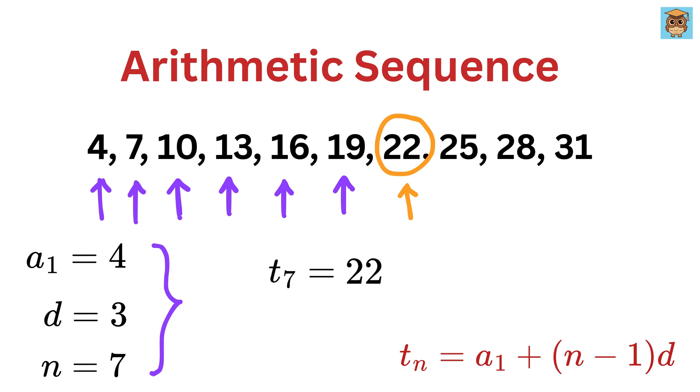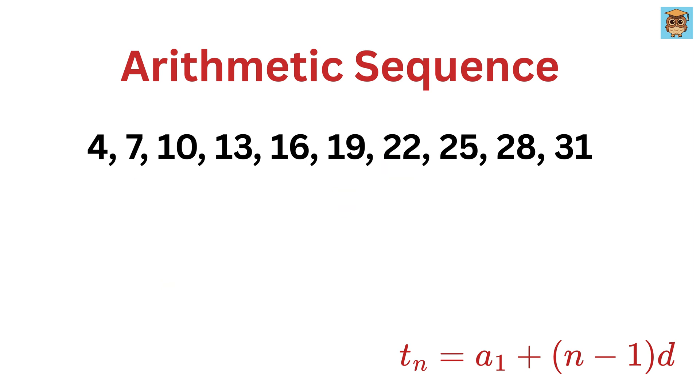Here is another cool thing you can do. Suppose I want to know the position of the term 28 in this sequence. Please don't start counting it one by one from the start. Instead, use this formula. Here, tn is 28, a1 is 4, and d is 3.